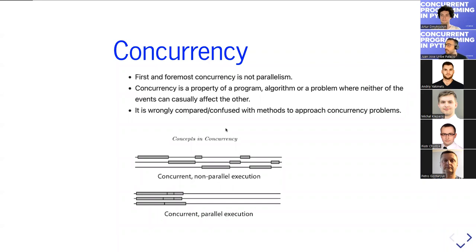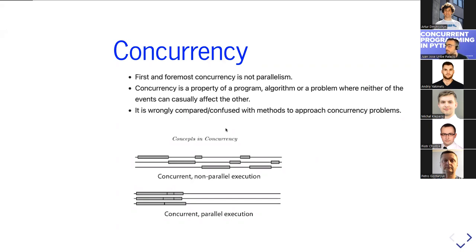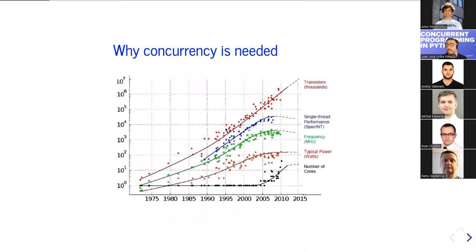Concurrency is often confused with the methods used to implement it. When solving concurrent problems, we have different approaches. One is non-parallel execution, where a manager handles context switching between threads — doing more things in the same time without accelerating the process. The other is parallel execution, where we increase the number of processes or executors acting at the same time.